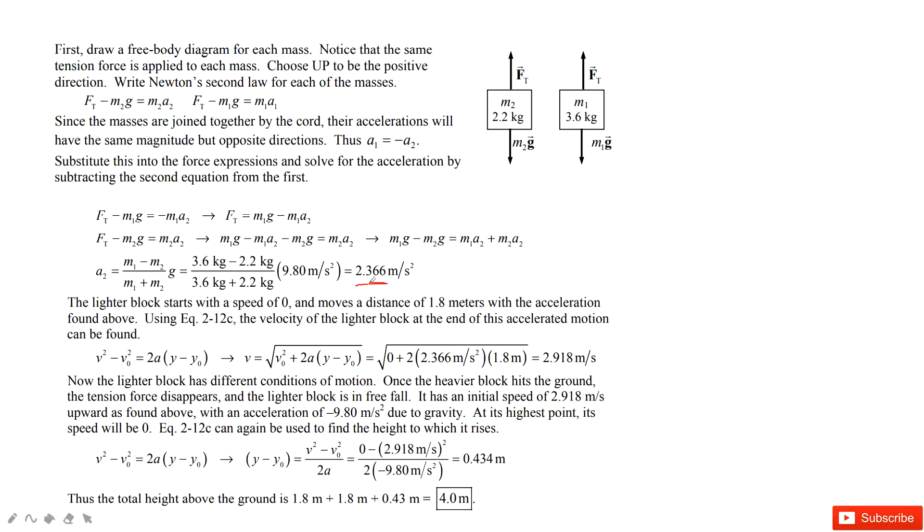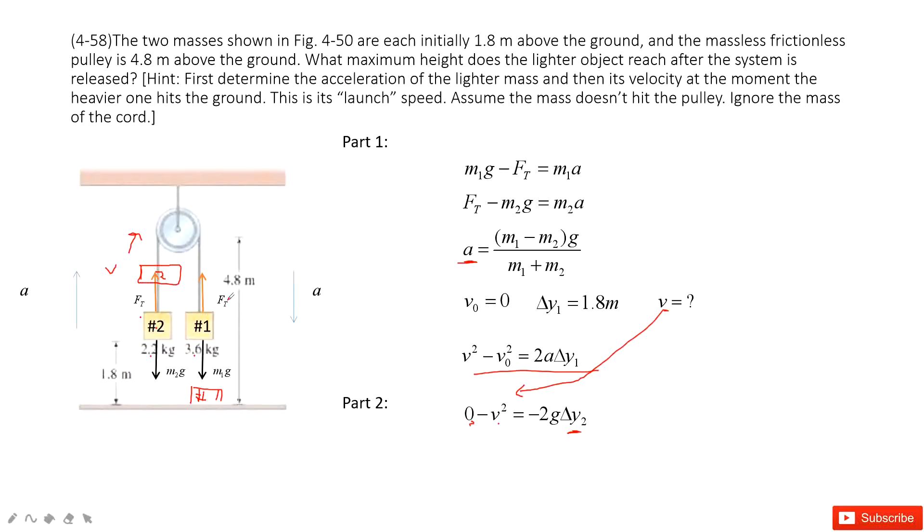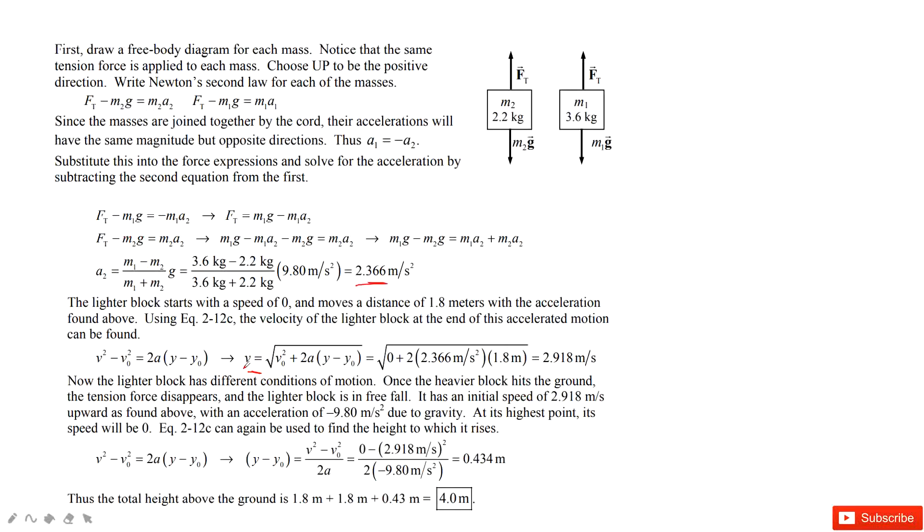First one, we find acceleration. After we find acceleration, we need to find the velocity when number 1 just hits ground, the velocity for number 2. After we get this velocity v, then we can use our favorite equation to find the displacement for the second part. And then, we add this delta y1, delta y2 together. This is total displacement. The number 2 moves. Thank you.